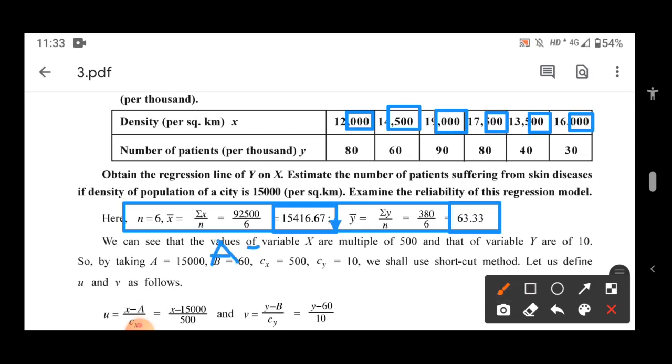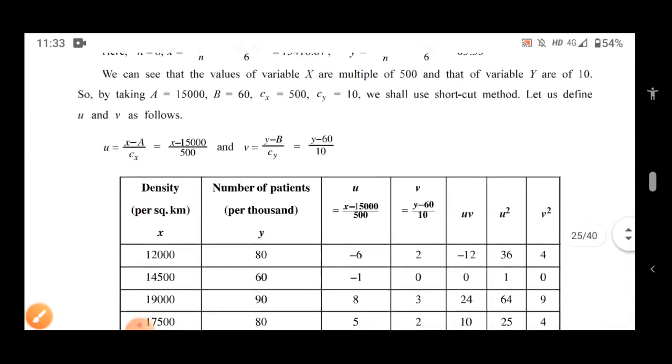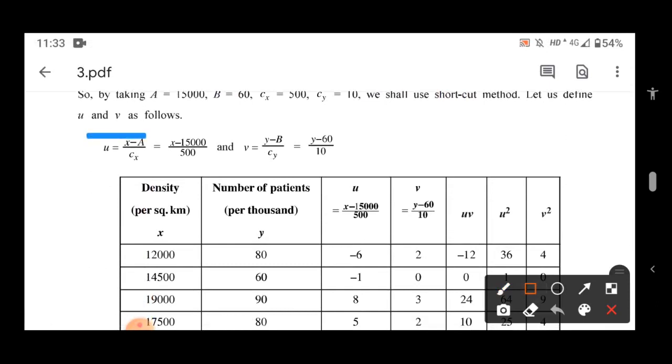You can assume that A is equal to 15,000. B is 60. Cx is 500. So, u is equal to (x minus A) divided by Cx, which is (x minus 15,000) divided by 500, and v is equal to (y minus B) divided by Cy, which is (y minus 60) divided by 10.